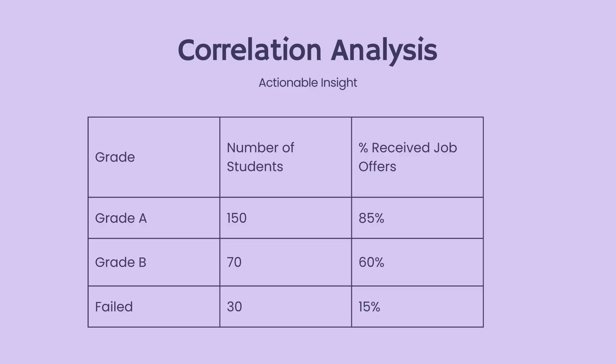Our findings are illustrated through the grading system's impact on job placement: 85% of students who achieved grade A, 60% of grade B, and 15% of grade C students received job offers. This highlights the significance of grades in securing job opportunities and reinforces the direct correlation between academic achievement and job market success. We'll explore how to apply correlation analysis to boost training efficiency.